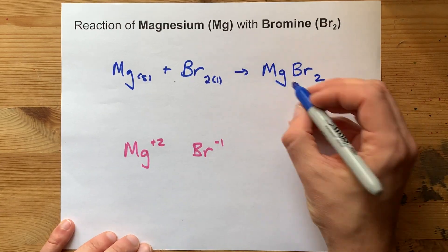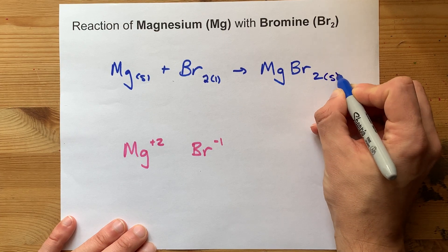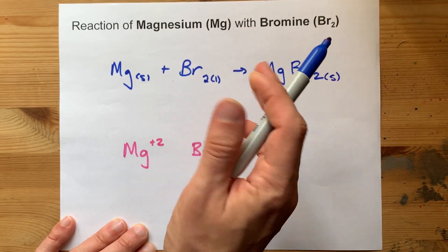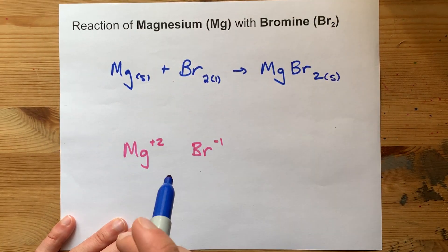Now that's a solid here because there's no water around to dissolve it. And it's ionic. Ionic compounds are always solids at room temperature unless they're dissolved.